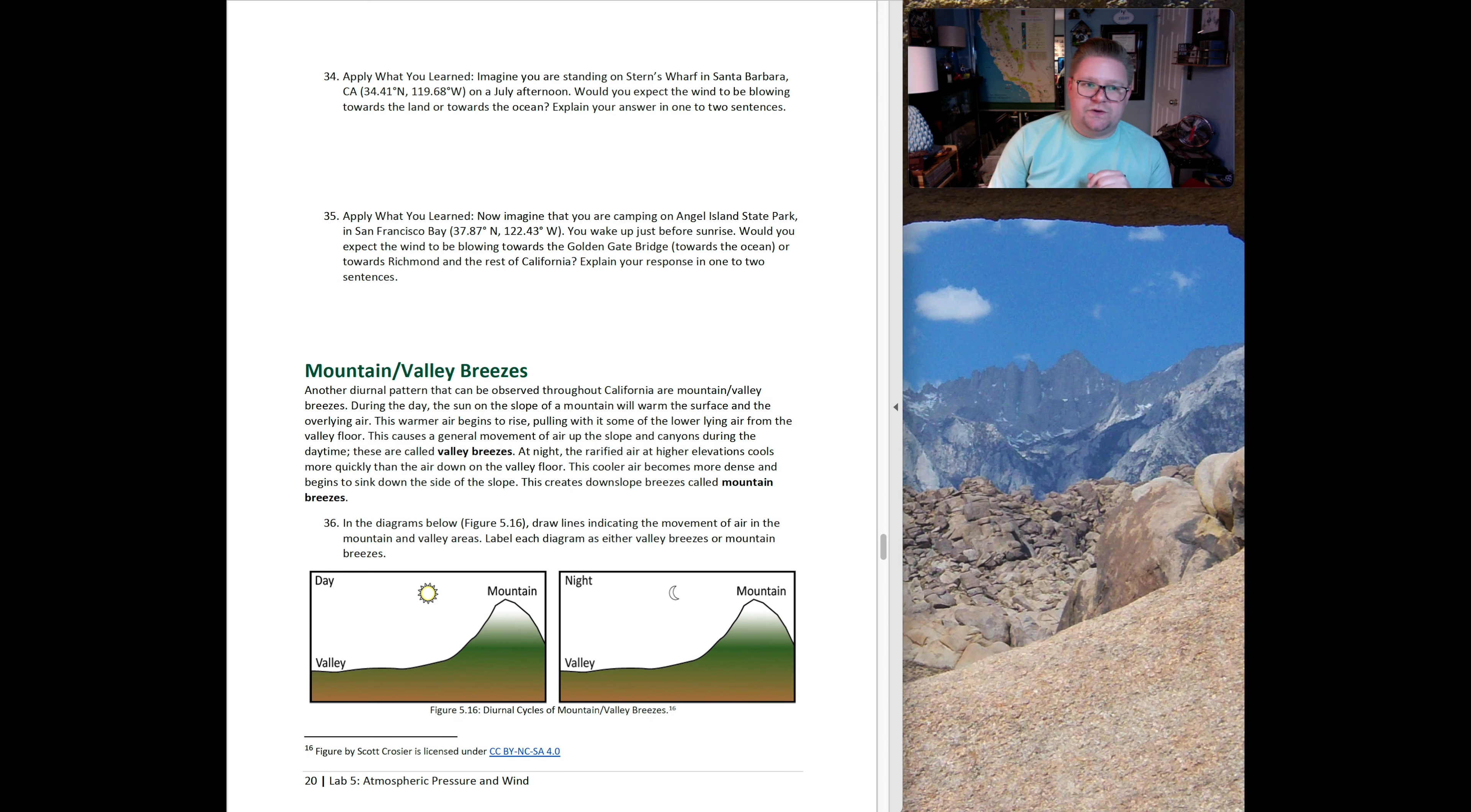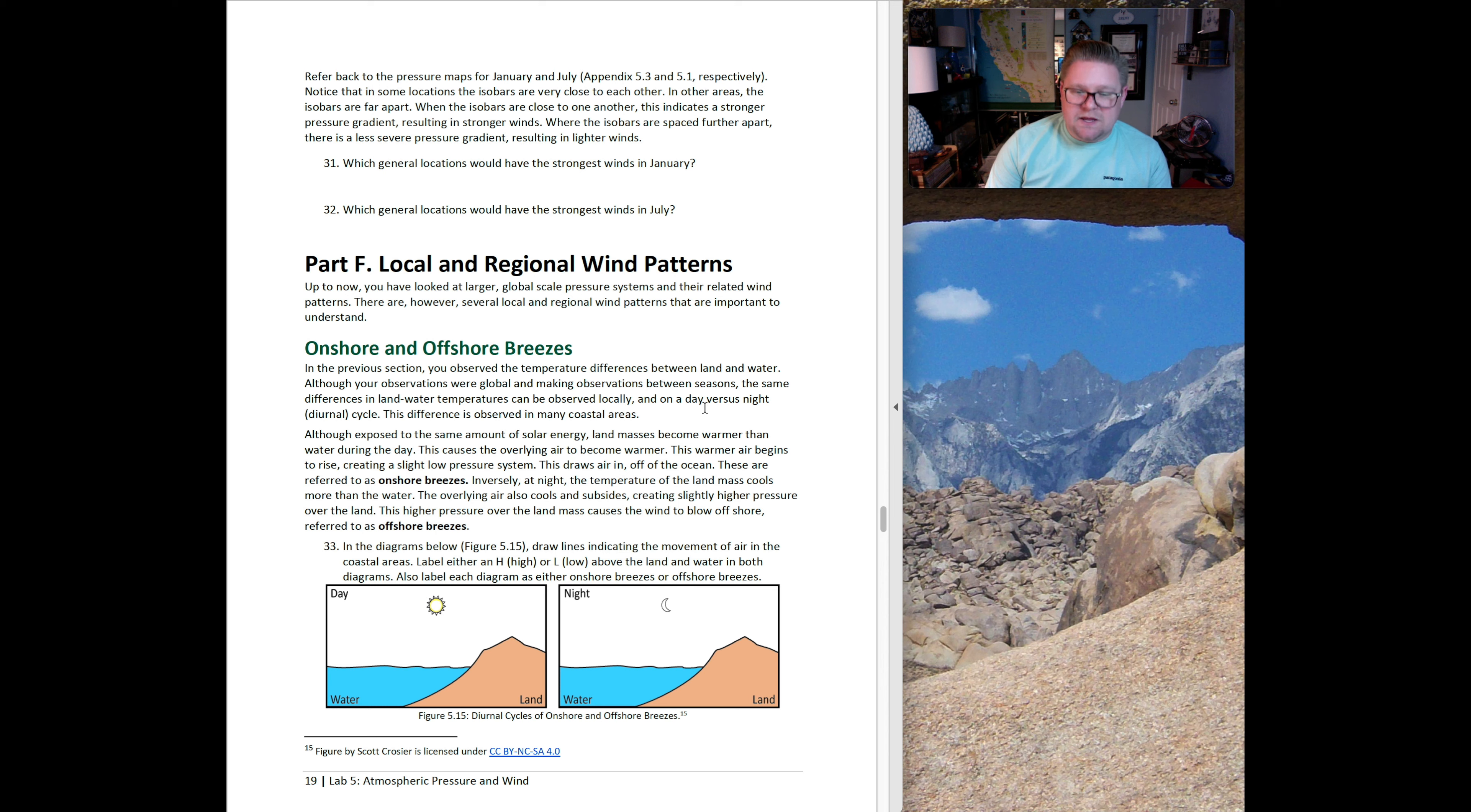The overlying air may cool and subside, meaning that it sinks, creating higher pressure over the land. This higher pressure over the land may cause the wind to blow offshore, known as an offshore breeze. Question 33 is having you decide whether we're looking at an onshore or offshore system. Question 34 says, imagine you're standing on Stearns Wharf in Santa Barbara on a July afternoon. Would you expect the wind to be blowing towards the land or towards the ocean and why?